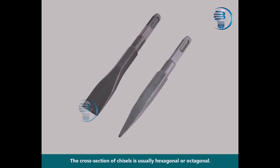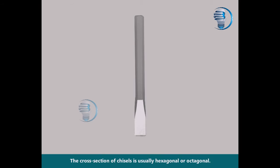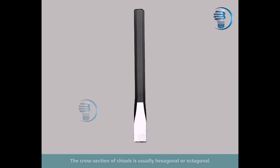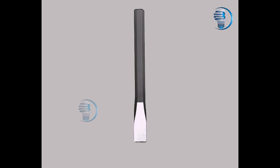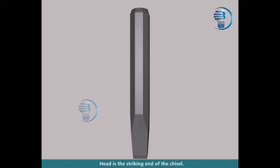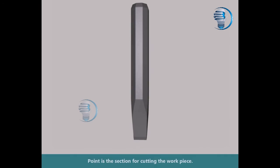The cross section of chisels is usually hexagonal or octagonal. The head is the striking end of the chisel. The body is the holding part of the chisel. The point is the section for cutting the workpiece.